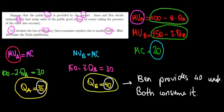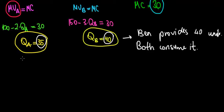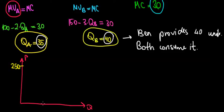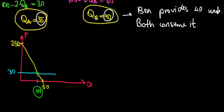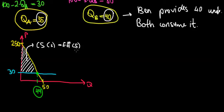Let's draw the market demand of 250 minus 5Q on a price and quantity graph. The price intercept is 250 and the quantity intercept is 50. The marginal cost is 30 euros. When society thinks collectively, there is a provision of 44 units, and the efficiency is the entire consumer surplus under the social optimum.